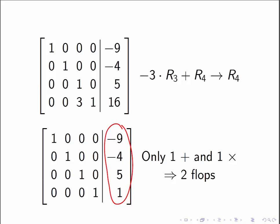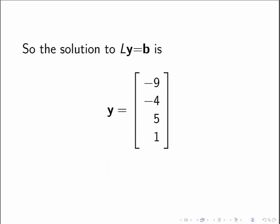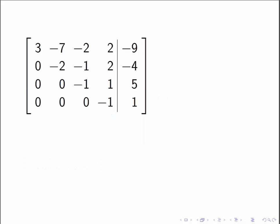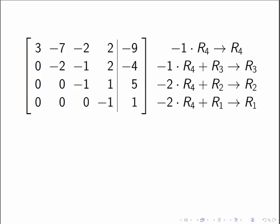So I've got y is equal to negative 9, negative 4, 5, and 1, and then I want to solve Ux equal to y. So I take my matrix U, and I have attached the column y, and then we look at what row operations would need to be done.